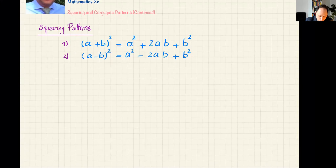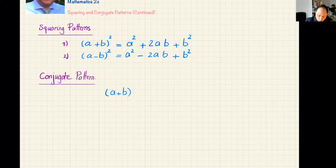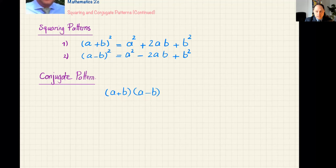There is also another pattern, which is also very ubiquitous in mathematics — it's called the conjugate pattern. The pattern is (a + b)(a − b), where you have two terms, once added and once subtracted, and you multiply the two results. It becomes a² − b².